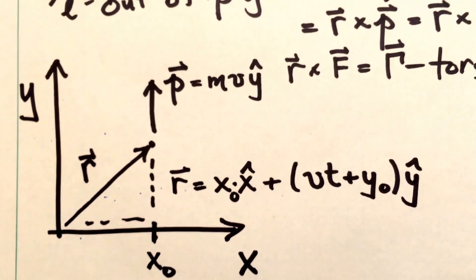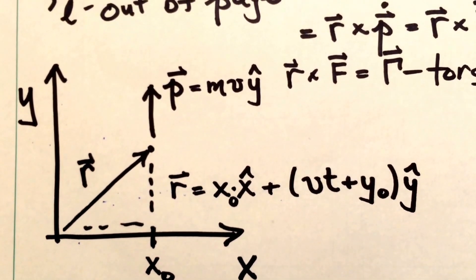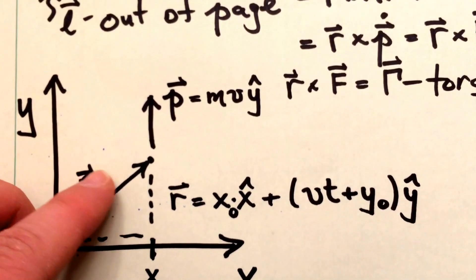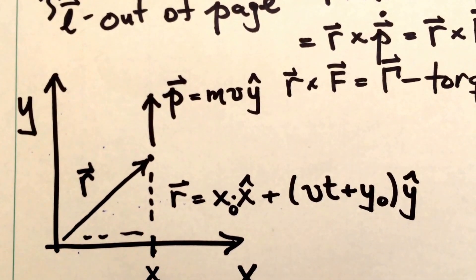And so this represents a particle traveling subject to no forces. It's just going to travel in a straight line along the y-axis at a fixed x value, x naught.